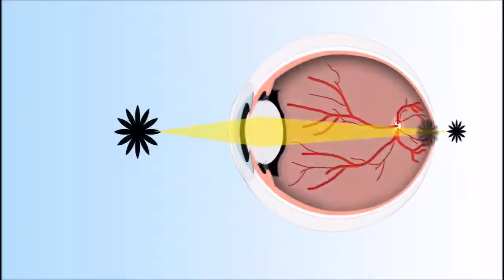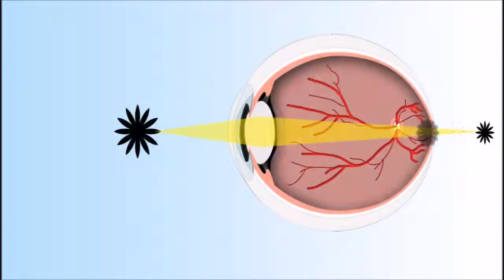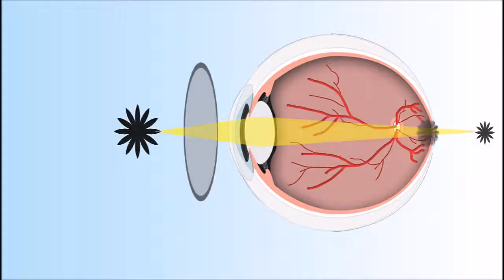The older individual needs help to refocus images up close, which is accomplished by using bifocal or reading glasses. These convex lenses refocus the image with clarity back onto the retina. Presbyopia is best corrected with glasses and contact lenses and is commonly diagnosed and treated by an optometrist.